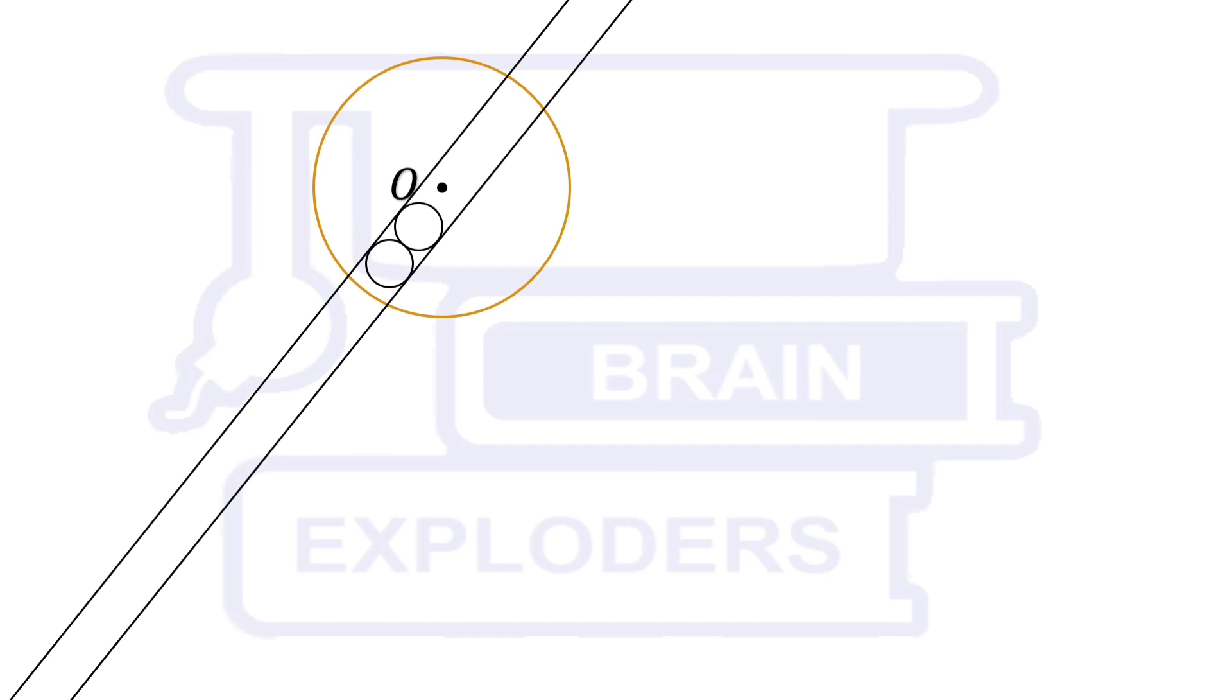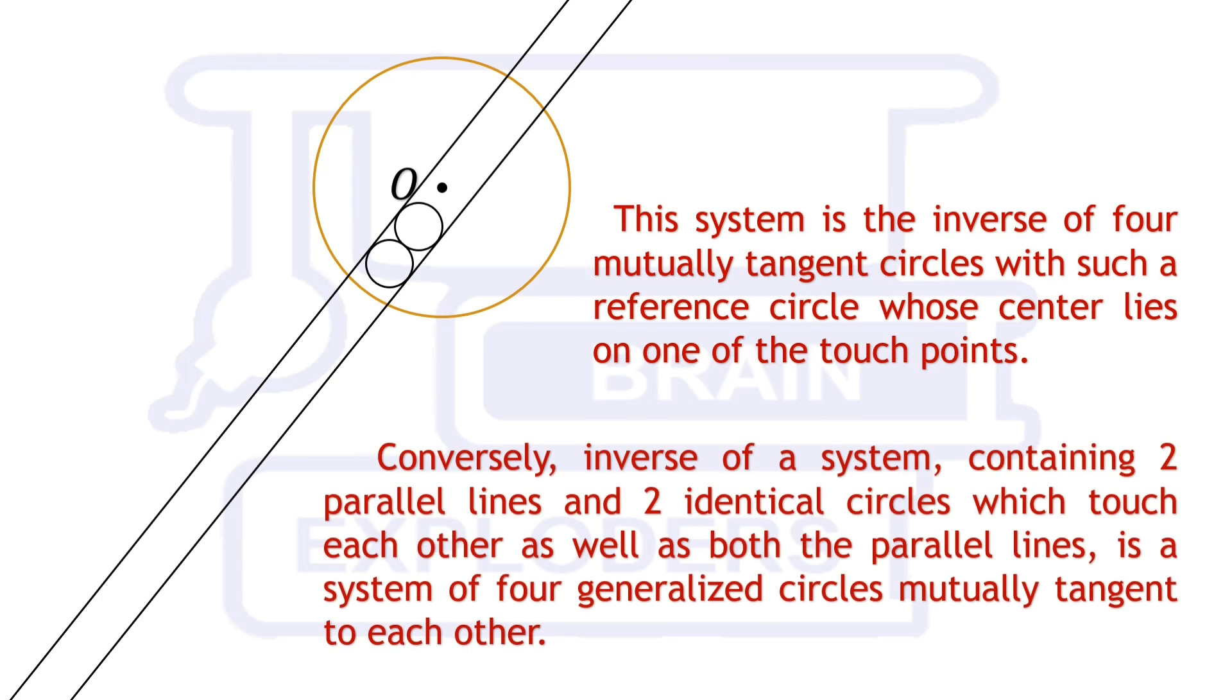No matter what is the distance between parallel lines and where the two identical circles are taken, inverse of this system will always be four mutually tangent circles. So, let's generalize this system with some parameters, find the radii of inverse of these elements in terms of those parameters and eliminate the parameters to find the relation between their radii.